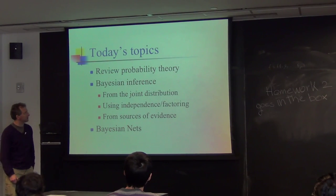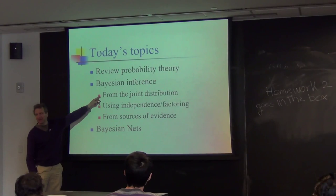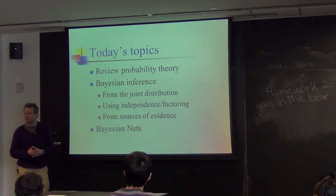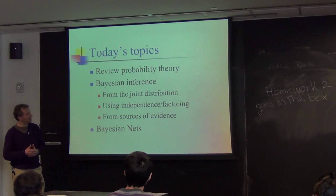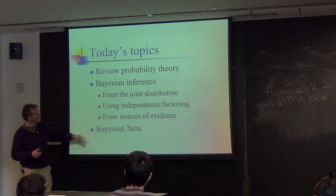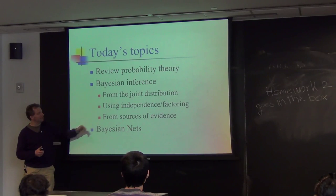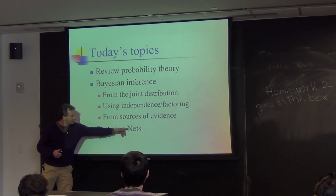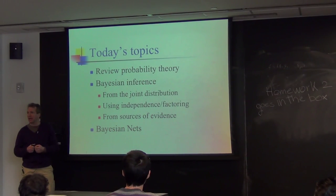Today we're going to review probability theory and talk about Bayesian inference. From a joint distribution — which is like the equivalent of a truth table in propositional logic — we'll discuss how you might go from that to something more computable when there are many more values involved. We'll talk about how you can use independence and factoring to find those inferences and reason from sources of evidence. Finally, we'll go into a description of Bayesian nets, which is a way of representing complex relationships that is fairly intuitive and allows you to do computation in a more efficient way.